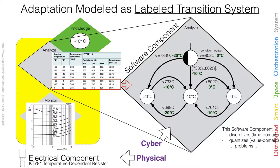As resistance rises above 733 ohms, we take the transition to minus 10; above 802 ohms we reach zero degrees, and if it falls, we go back. Interestingly, the transition upward is at 802 and downward at 761 — this is called hysteresis. We have a range in between to prevent the system from flipping very often, which would produce excessive computational effort on the processor. You can model this entire thing inside a tool — here I modeled the electrical component, showing resistance going up and down on the left and the state machine on the right.